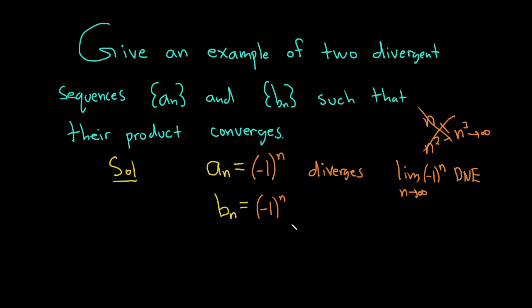But the really cool thing happens when you multiply these together. So if we take a sub n times b sub n, that's equal to negative 1 to the n times negative 1 to the n.